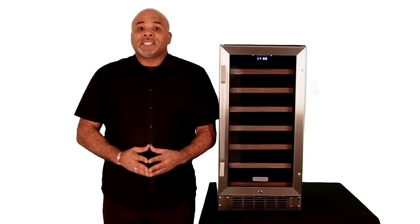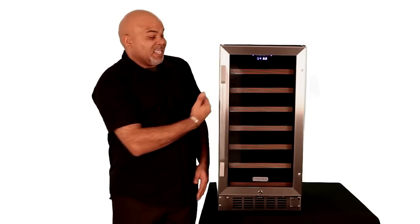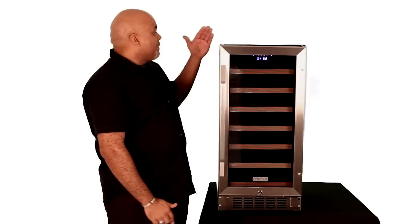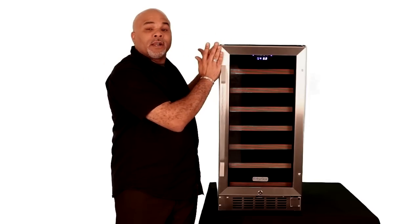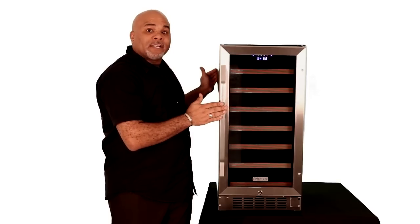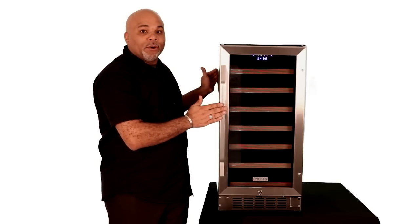Finally, because this is a built-in unit, keep in mind that it is 15 inches wide, 32 inches high, and from the back to the front of the door, it's 23 3/4 inches, and to the front of the towel bar handle, it's 25 3/4 inches.